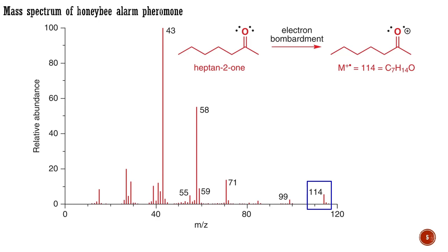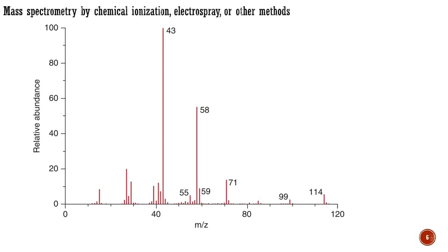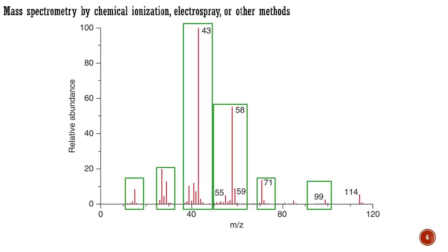A problem with electron impact mass spectrometry is that, for fragile molecules, the energy of the bombarding electron can be sufficient to cause it to fragment completely, losing all trace of the molecular ion. Some useful information can be gained from fragmentation patterns, but in general it is more useful to aim to weigh the molecule all in one piece. This can be achieved using any of a number of other techniques, of which the most common are chemical ionization and electrospray. There are several ways of ionizing a molecule gently so that its mass can be determined.